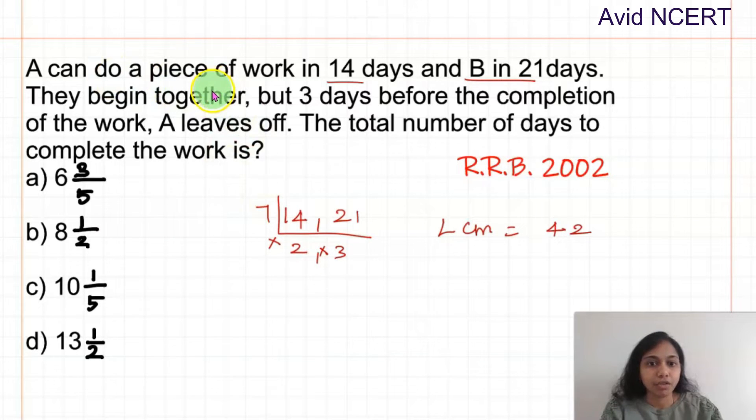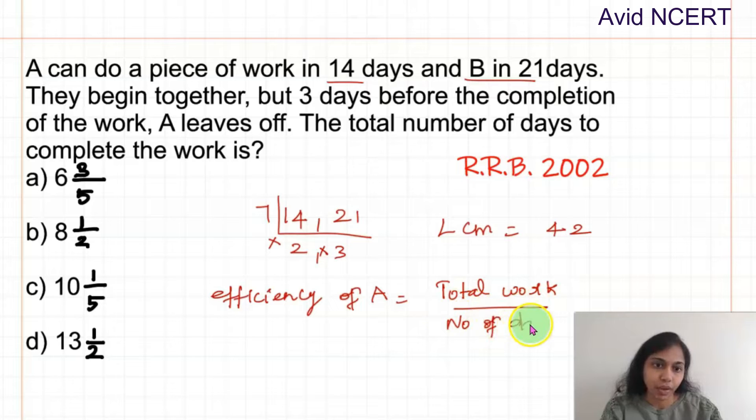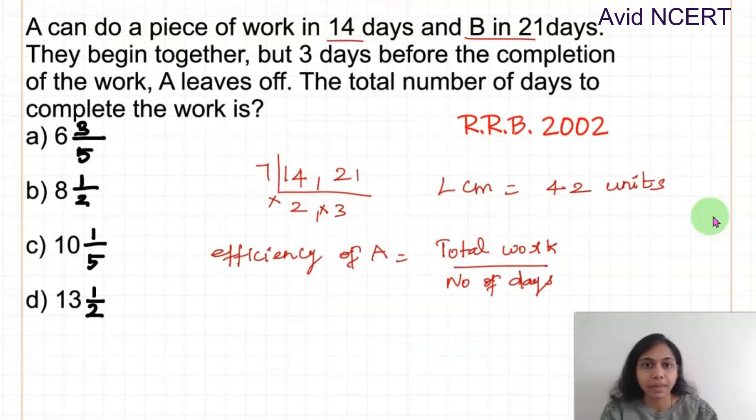To define the capacity of A, the efficiency of A can be found by total work divided by the number of days taken to finish that work. So here it is 42 units of work which is the total work which has to be done. For A it is total work 42 divided by number of days, A will take is 14. So 42 divided by 14 is 3 units. A can do 3 units of work per day.